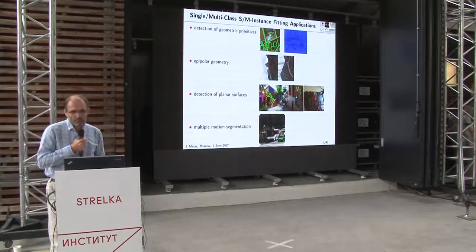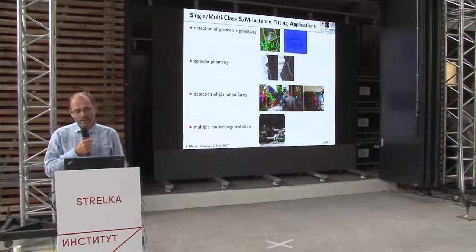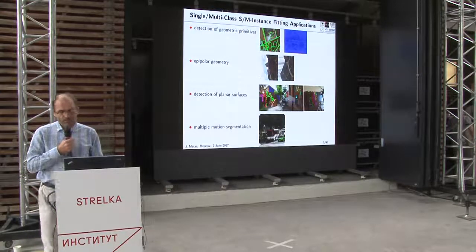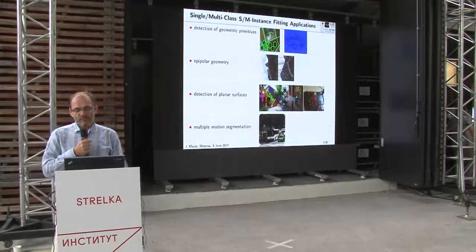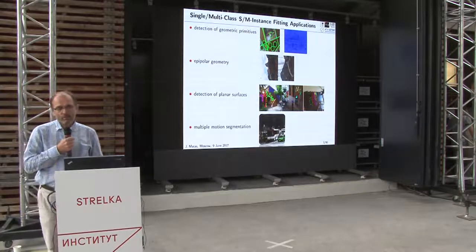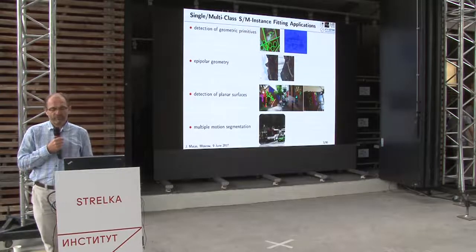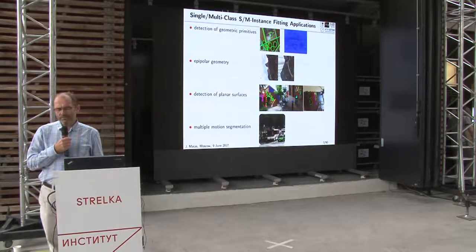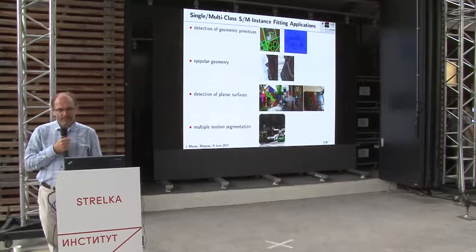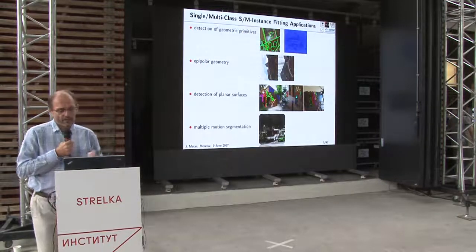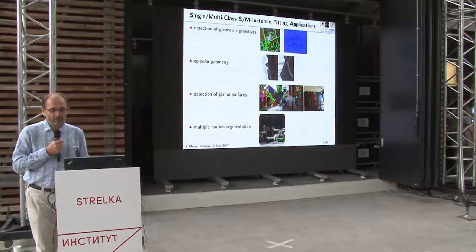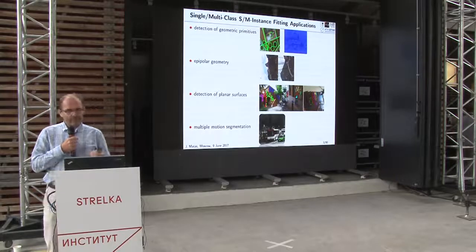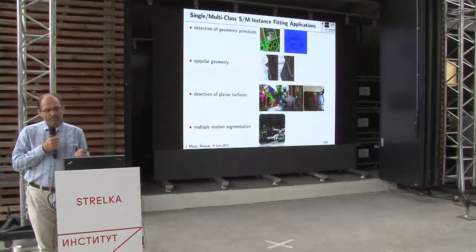Examples include counting coins or cells — more generally, detection of geometric primitives. The image on the right shows traces from a bubble chamber, where you would like to interpret the image as a set of parametrically defined curves with multiple instances. Another example is a pair of images of the Chinese Wall, where correspondences have been established based on patch analysis.